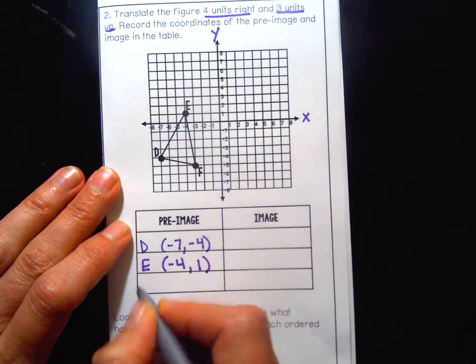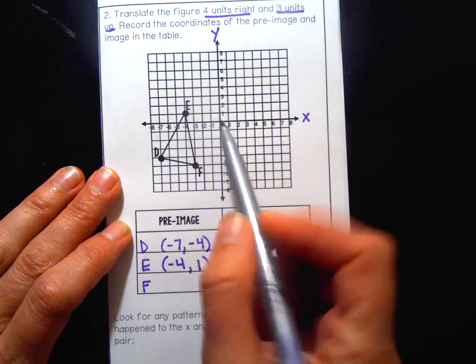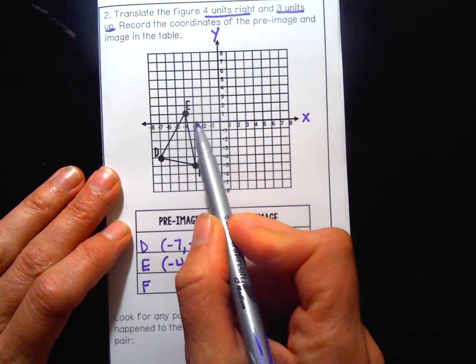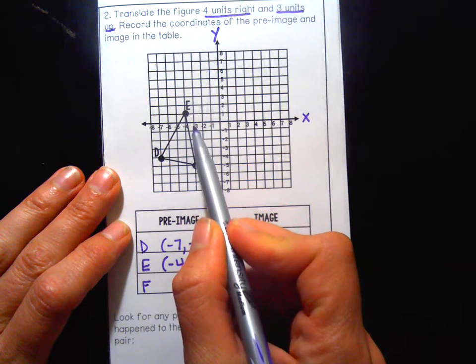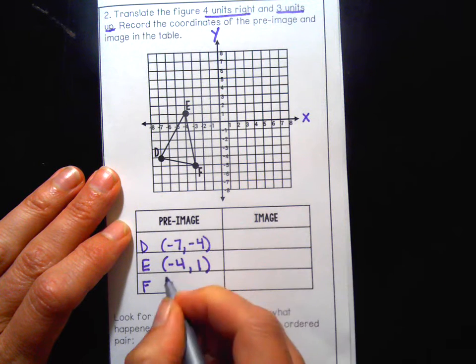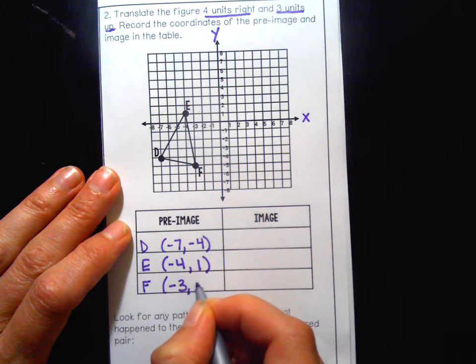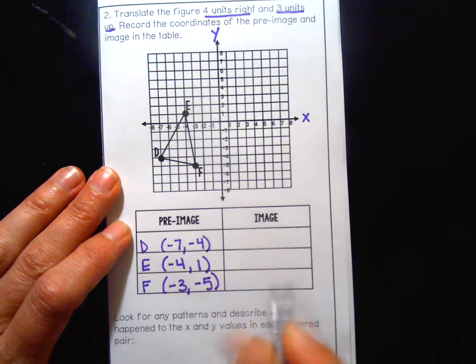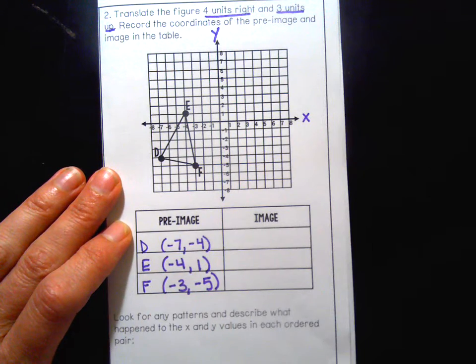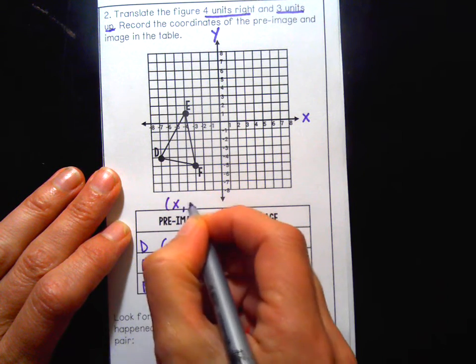And then finally F, in the lobby, down the elevator, negative three, down to negative five. Those are the coordinates of my pre-image, the x and y values.